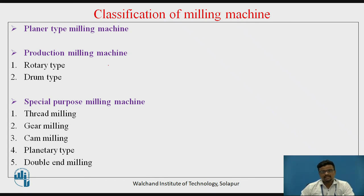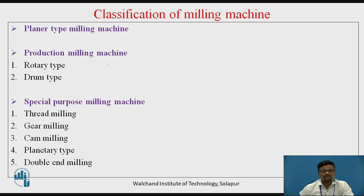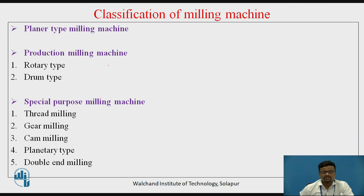There is also the production milling machine category, which includes the rotary type and drum type milling machine. In the rotary type, you can provide rotary motion to the work table as well. This allows different types of cutting operations — you can even provide angular drilling operations. There are also special purpose milling machines, for example the thread milling machine, gear milling machine, gear hobbing machine used to develop gear teeth using an indexing mechanism, cam milling, planetary milling, and table end milling.